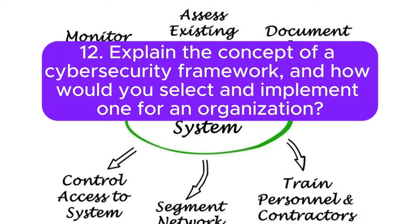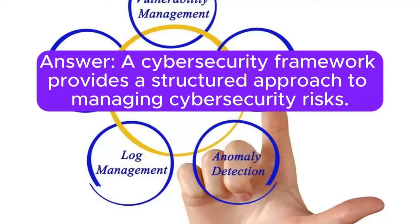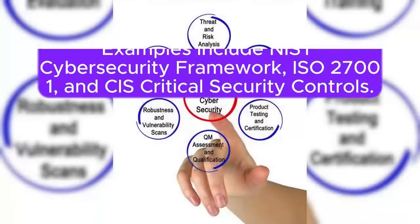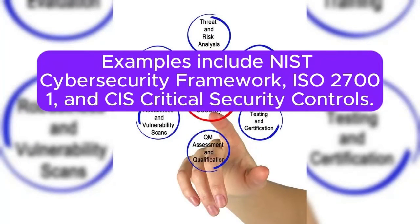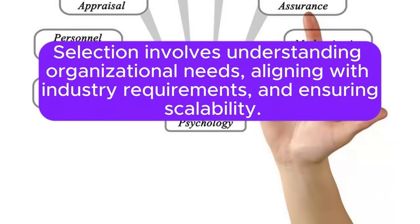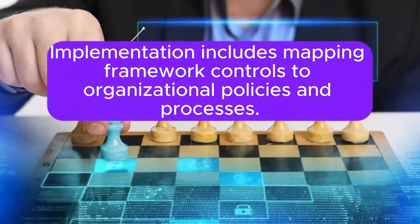Question 12: Explain the concept of a cybersecurity framework and how would you select and implement one for an organization? Answer: A cybersecurity framework provides a structured approach to managing cybersecurity risks. Examples include the NIST Cybersecurity Framework, ISO 27001, and CIS Critical Security Controls. Selection involves understanding organizational needs, aligning with industry requirements, and ensuring scalability. Implementation includes mapping framework controls to organizational policies and processes.